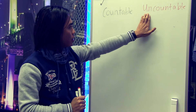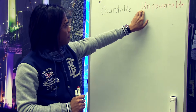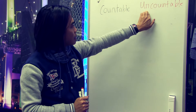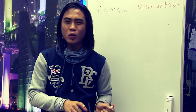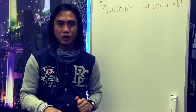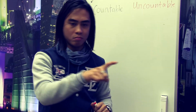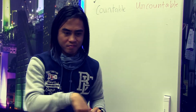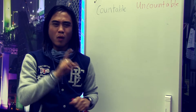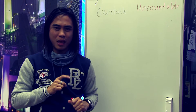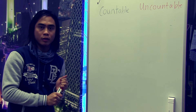So here, uncountable nouns — it means that you cannot count it. So maybe one part, one cannot be. That's why it's an uncountable noun.